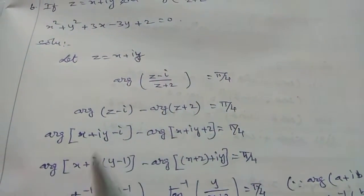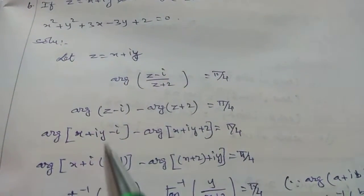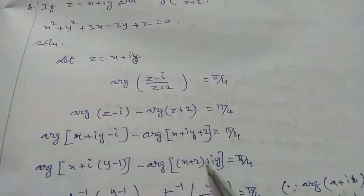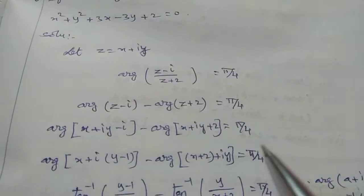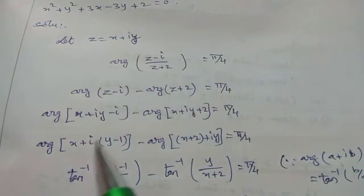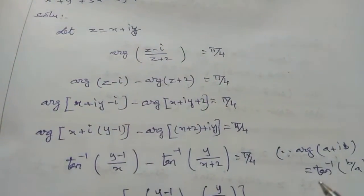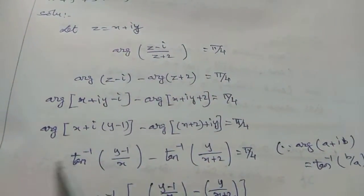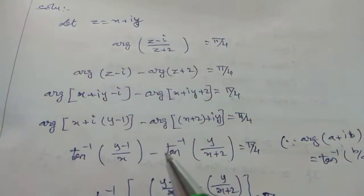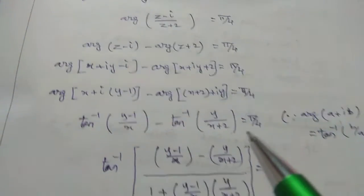Argument of real and imaginary parts: x plus i(y minus 1), minus argument of (x plus 2) plus iy equals π/4. Using the form argument of a plus ib equals tan inverse of b by a: tan inverse of (y minus 1)/x minus tan inverse of y/(x plus 2) equals π/4.